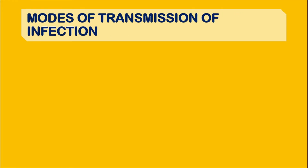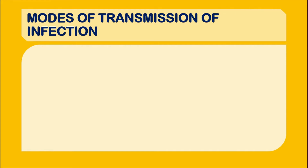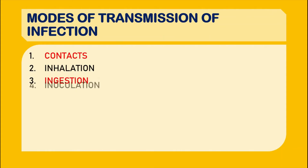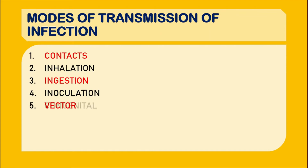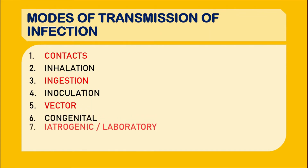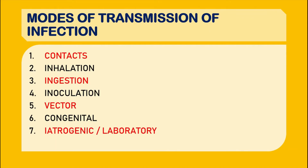In this part, we will see the different modes of transmission of infection. These modes mainly include: first, contacts; second, inhalation; third, ingestion; fourth, inoculation; fifth, vector; sixth, congenital; and the seventh, iatrogenic and laboratory infection. Now we will see one by one the different modes of infection.